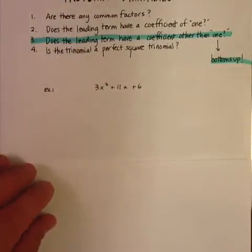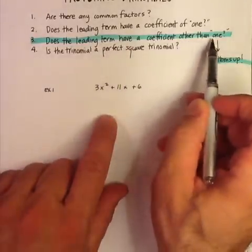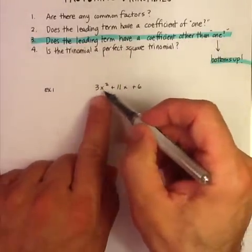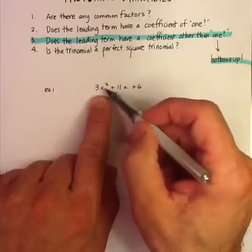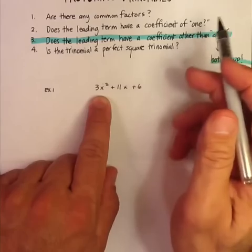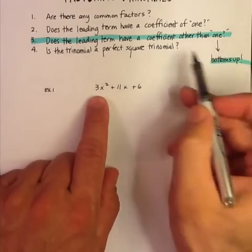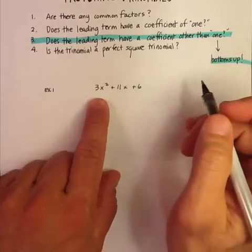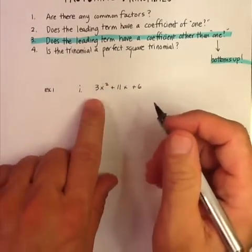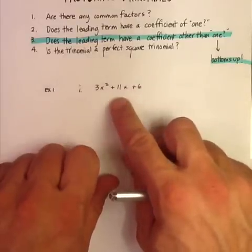Let's look at this first example where the leading coefficient is a number other than one. The leading coefficient is the number in front of the x² in the leading term. Notice we have a coefficient that's three. With the bottoms-up method, you can start guessing combinations of three and six that add up to eleven, or you can follow the bottoms-up method, which is a four-step method.